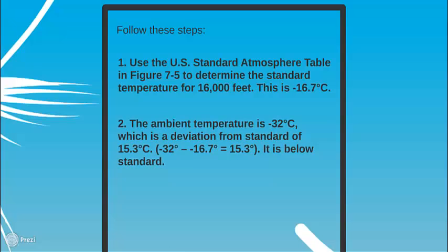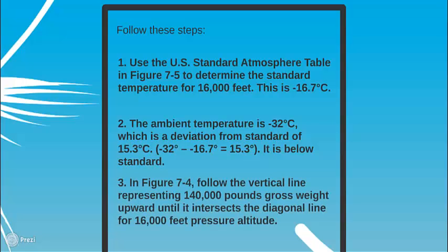Second step: the ambient temperature is negative 32 degrees Celsius, which is a deviation from standard of 15.3 degrees Celsius. It is below standard.